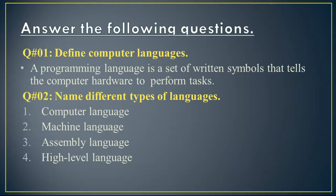Question number 2 is: name different types of languages. The first one is computer language, the second one is machine language, the third one is assembly language, and the fourth one is high level language.